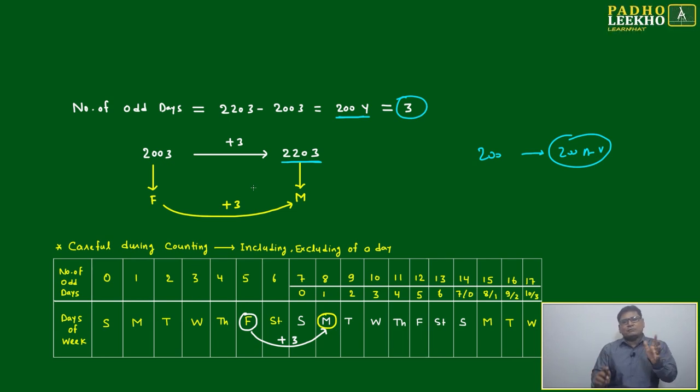Adjustment will be here plus minus one only, that is fixed. Here nobody can adjust plus five or minus five, no. Fine tuning will be like based on this number of odd days in 200 years.